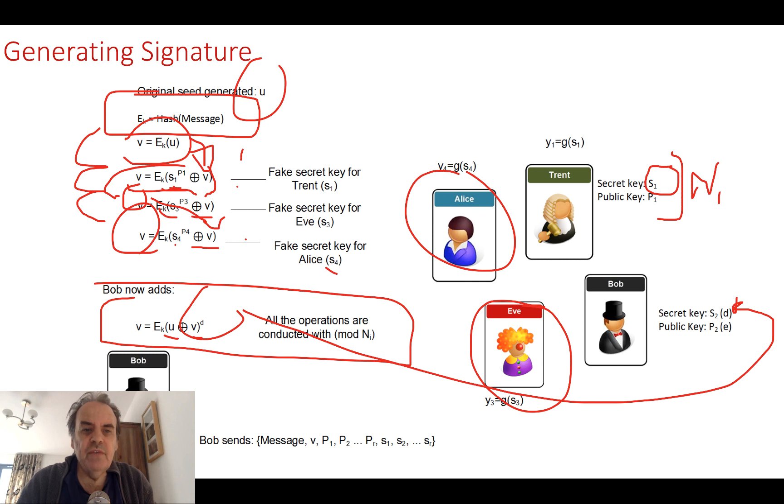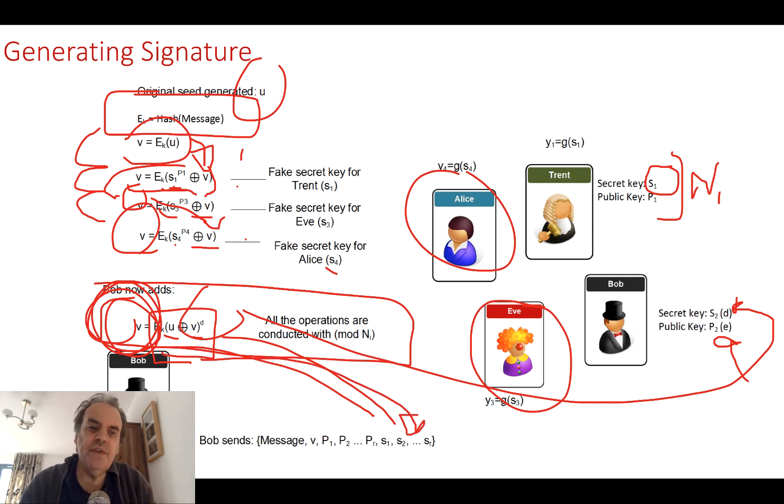This is a trapdoor function. If we now raise this to the power of e, then our original value will be seen. That's how RSA actually works. So Bob now ends up with this value. He takes all the fake values and puts them in. And then he actually shows that this is his secret key and he places that in there. So he hasn't revealed his private key or his decryption key. He also sends the message and the v value for someone else to be able to verify.